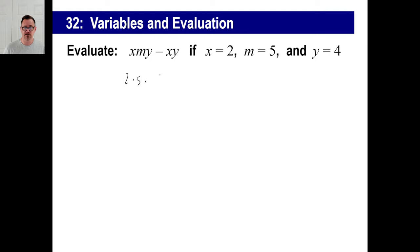So X times M times Y is what this is. So they're telling us X is 2 times M is 5 times Y is 4. And that's that part right there minus X times Y. So X is 2 and then Y is 4. Now again, if you write this out like this, you have to make sure that you are consistently doing order of operations correctly.